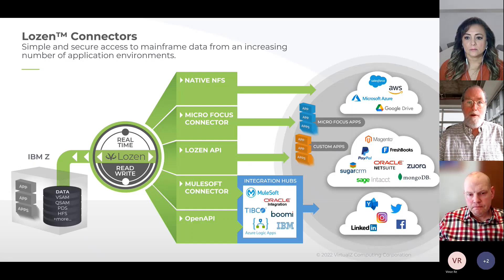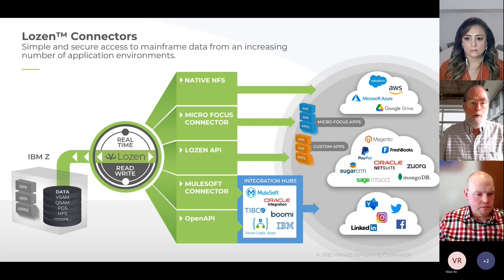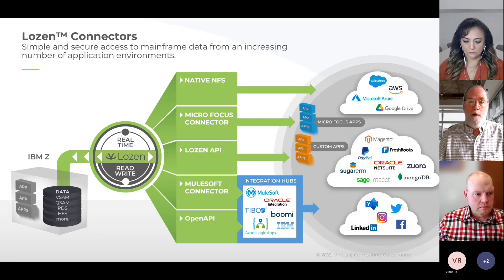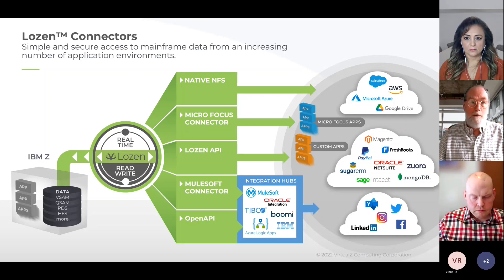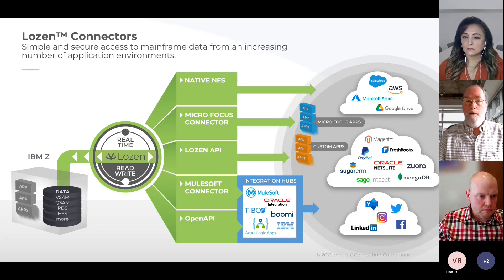In addition to the base functionality shipped with Lozen, we provide additional components to allow convenient access through a variety of interface styles to a wide set of consumers. Lozen natively leverages NFS to mount IBM Z VSAM and sequential files in the local file system of your Linux and Windows servers and desktops. All applications and processes running on those systems access those files with standard file open, read, write, close commands — as simple as a command line copy or an application file open.